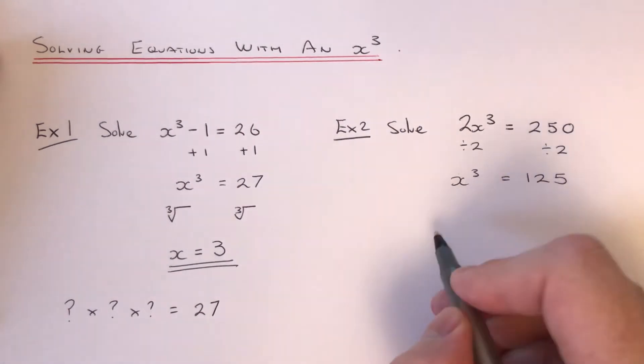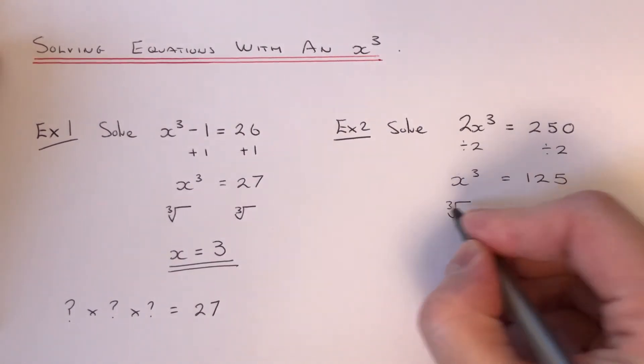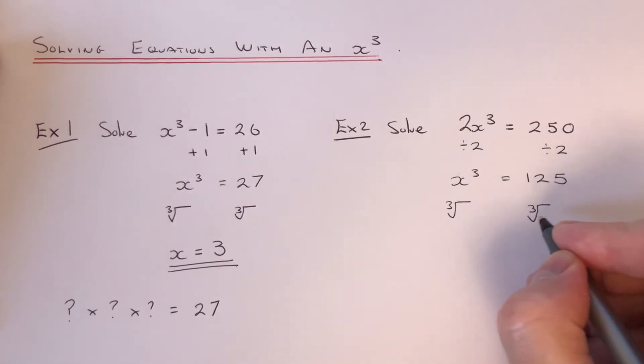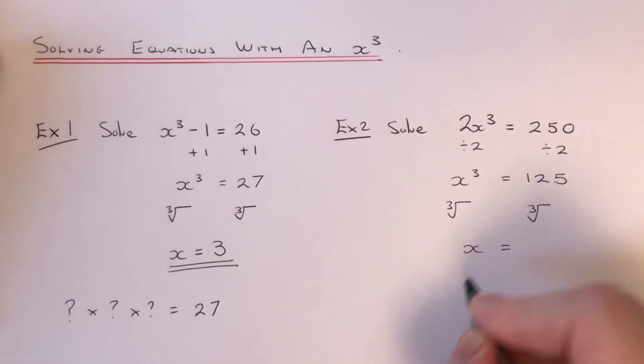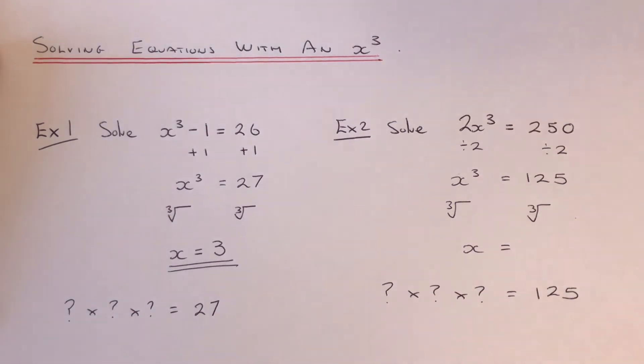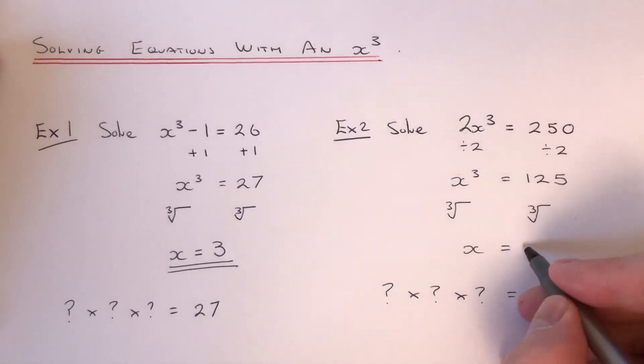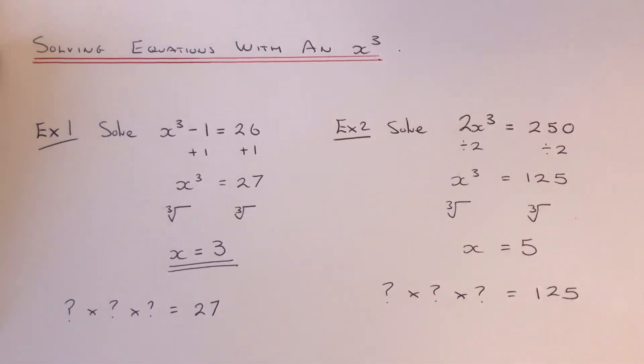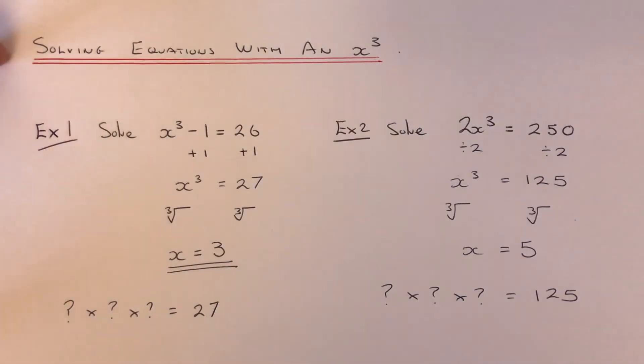And then finally, the opposite to a cube is a cube root. So we've got a cube root of 125. So we've been looking for something times something times something gives 125. And that number that we're looking for is 5. Because 5 times 5 times 5 is 125.